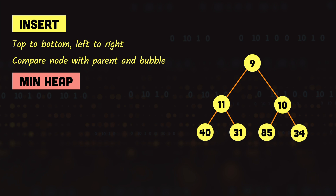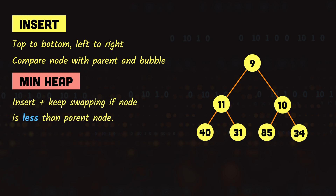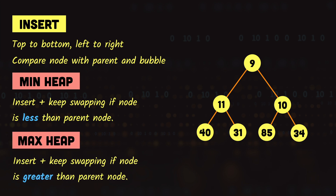This is how new nodes are inserted into a min heap: we insert the node and keep bubbling it up while its value is smaller than the parent node. Similarly in a max heap, we insert a node and keep bubbling it up if the newly inserted node's value is greater than the parent node. The algorithmic complexity of insertion in a heap — whether min heap or max heap — is logarithmic.